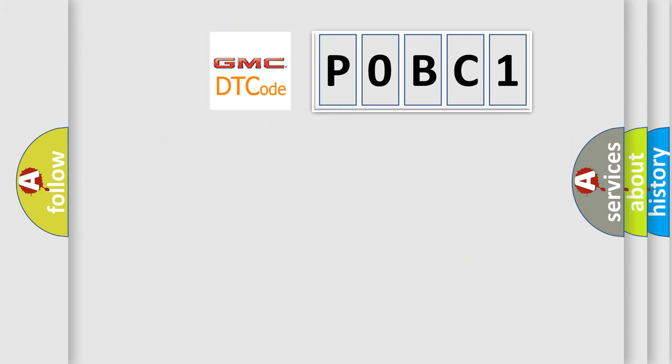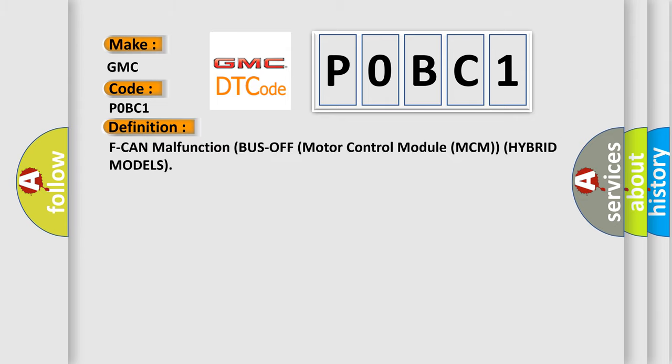So, what does the diagnostic trouble code P0BC1 interpret specifically for GMC car manufacturers? The basic definition is F-CAN malfunction bus off motor control module MCM hybrid models.